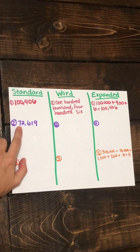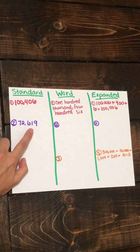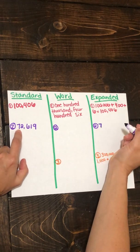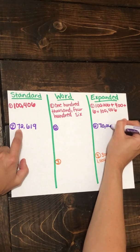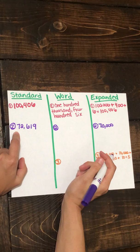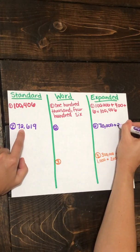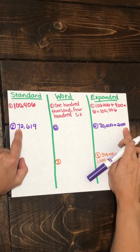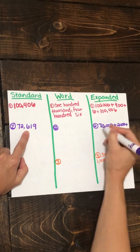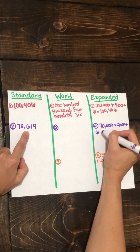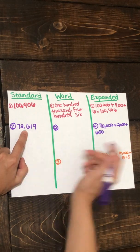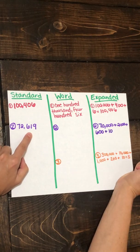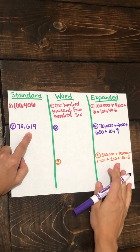Our standard form is 72,619. Let's start with our seven — this digit is in the ten thousands place, giving it a value of seventy thousand. We put our seven, everything else gets turned to zeros. Plus a two in the thousands place is worth the value of two thousand. Plus a six in the hundreds place — that would be a value of 600. Plus a one in the tens place is worth ten, and nine in the ones place is worth nine.